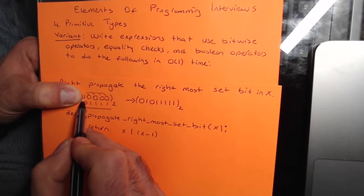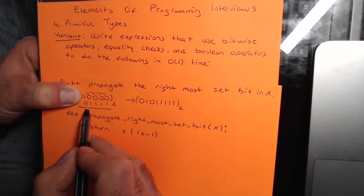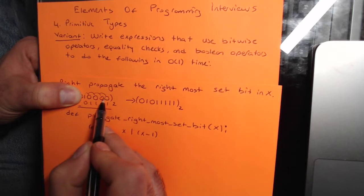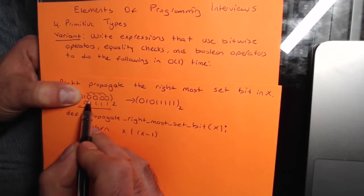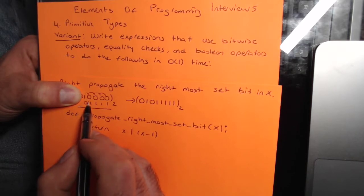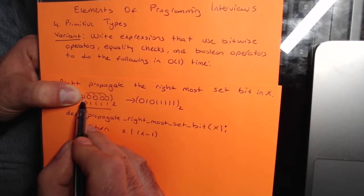If you subtract 1 from 16, it becomes 15 in decimal, which is represented as 0111 in binary. So this is binary 15, this is binary 16. If you want to get a binary number where all the digits on the right side of the rightmost set bit is 1, you subtract 1 from it.